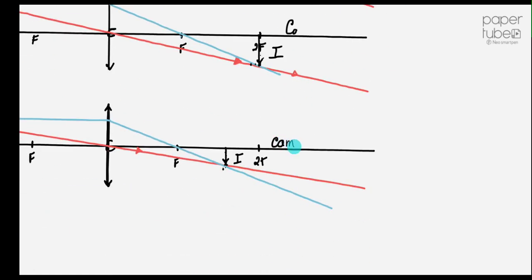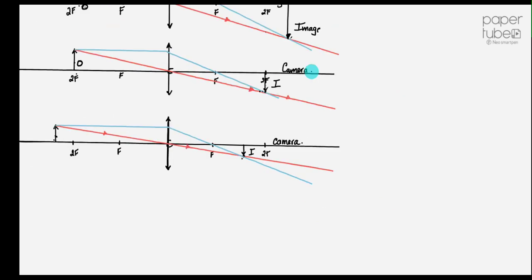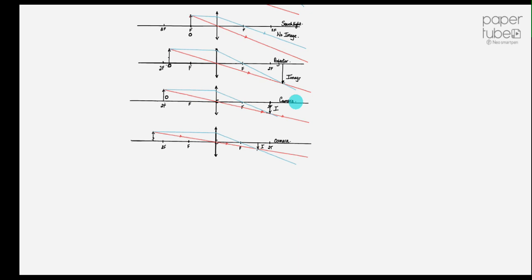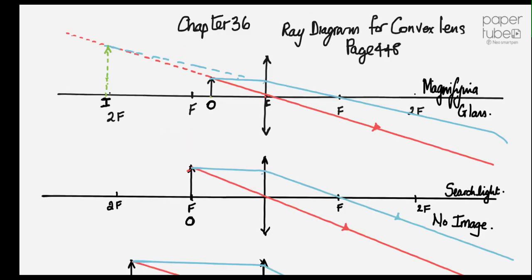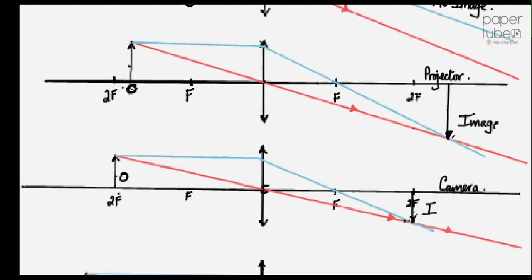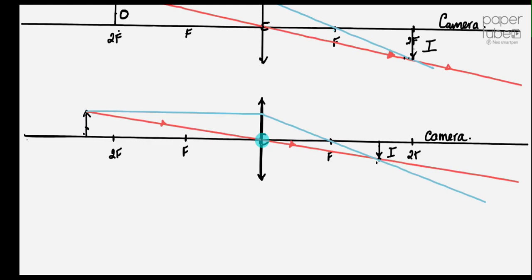And that's a camera. There's the five of them drawn. If I zoom out — there's what you should be submitting to me. Good, clear, accurate diagrams for the convex lens. Thank you very much for watching. I want the work done and I want it uploaded in Google Classroom. Toodle Bip.